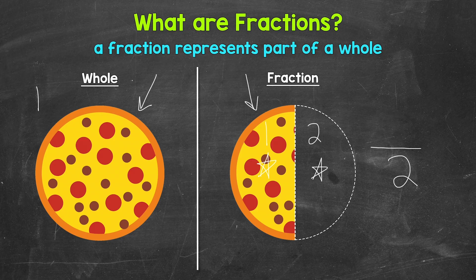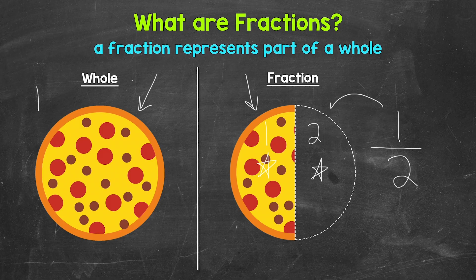We need our fraction bar to separate the top and bottom number. And now we need the top number. The top number is going to be how many of the equal parts we have out of the whole. So in this case, we are looking at the part of the pizza that is left. We have one part left. So one is our top number. And that's our fraction — one over two. We say this fraction one half. So we have one half of the pizza left. This fraction represents this amount. We have one part left out of the two total parts.